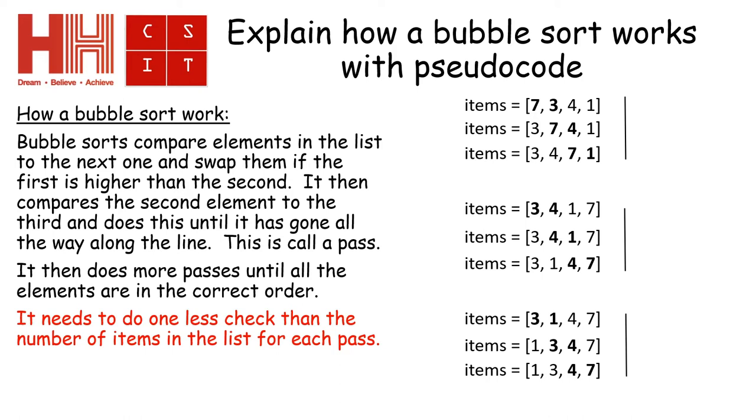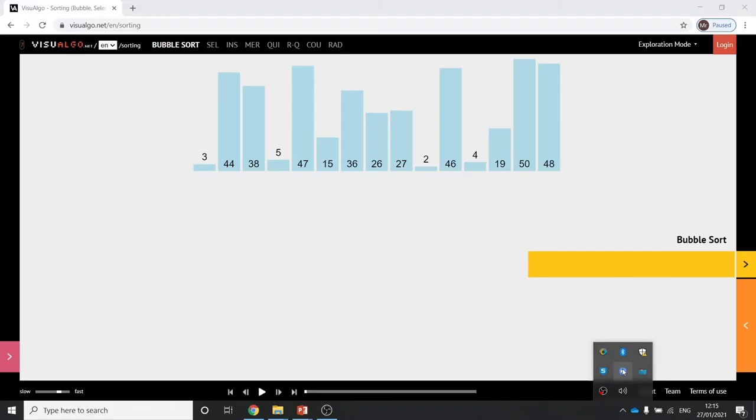So if you work your way down the list, you can see that the largest number gets moved to the right and the smallest number over time will move to the left.